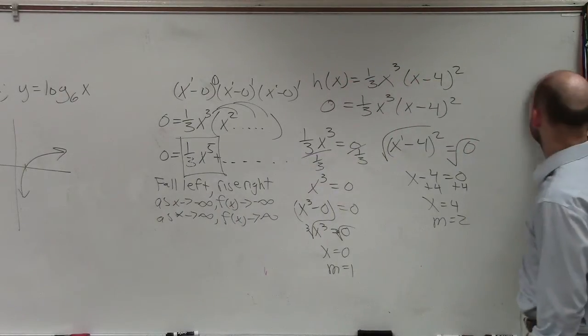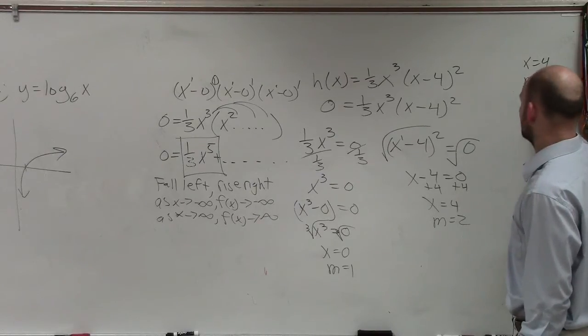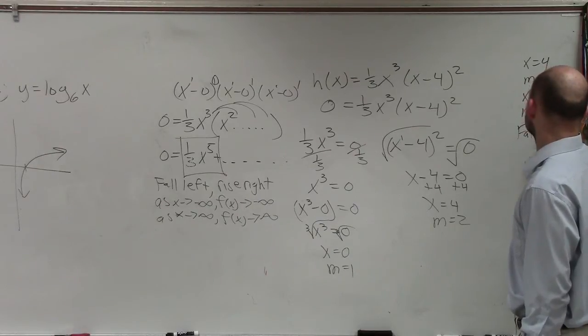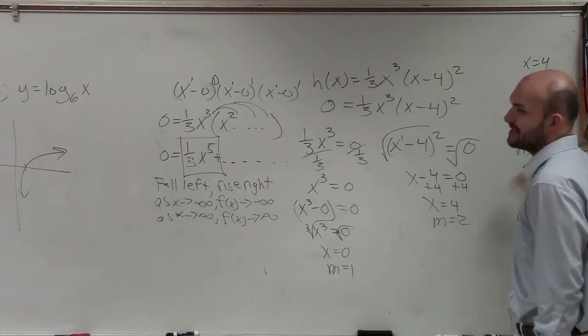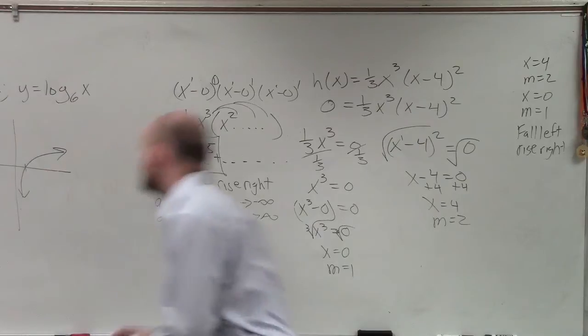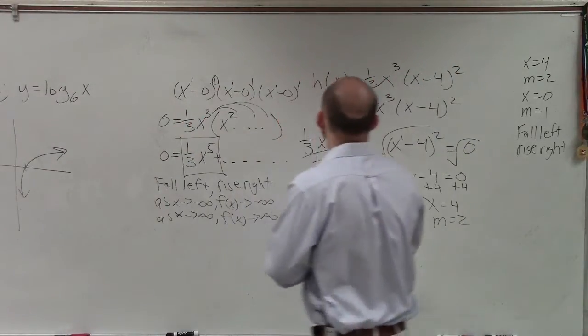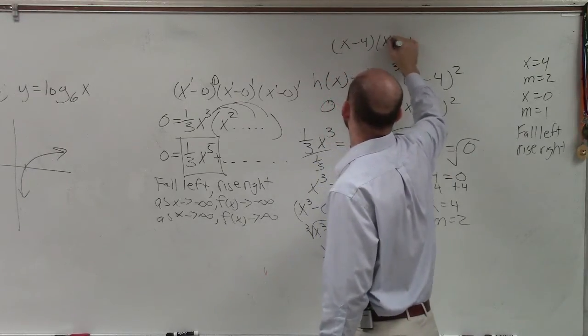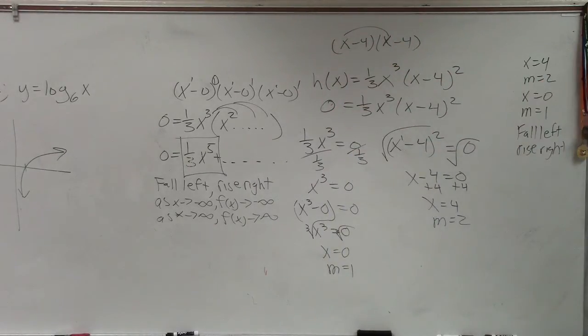All right. So ladies and gentlemen, what we have is x equals 4, multiplicity equal to 2. We have x equals 0, multiplicity equal to 1. And we have a fall left, rise right. All right, now obviously obtaining all this information. Yes? Can you read it if you could put x² and you would not be able to show it? Because if I did, x minus 4 squared is x minus 4 times x minus 4. Right? When I do FOIL, that's going to be my first term.